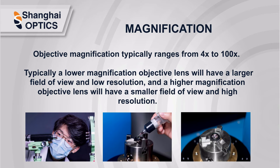Objective lenses are used to magnify an object to a large image. In addition to numerical aperture, magnification is also an important parameter. The objective magnification typically ranges from 4x to 100x. As the image sensor size or eye observed area is fixed, the field of view changes with the magnification of the objective lens. Typically, a lower magnification objective lens will have a larger field of view and low resolution, and a higher magnification objective lens will have a smaller field of view and high resolution.